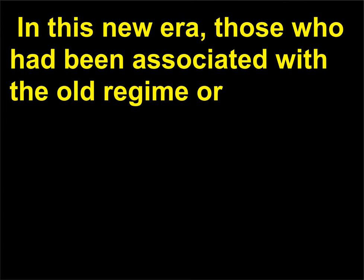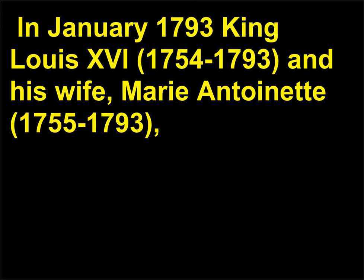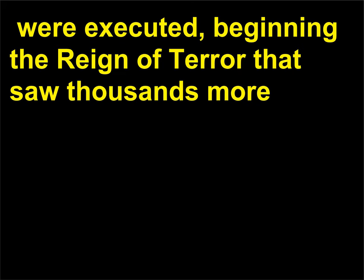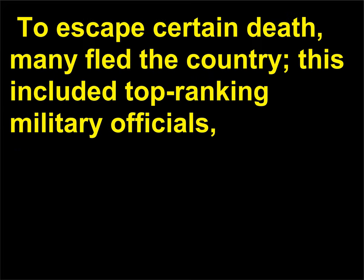In this new era, those who had been associated with the old regime or those who opposed the French Revolution became the subjects of persecution. In January 1793 King Louis XVI, 1754–1793, and his wife, Marie Antoinette, 1755–1793, were executed, beginning the reign of terror that saw thousands more — mostly those who had made up the powerful first and second estates — suffer a similar fate at the hands of the revolutionaries. To escape certain death, many fled the country; this included top-ranking military officials,